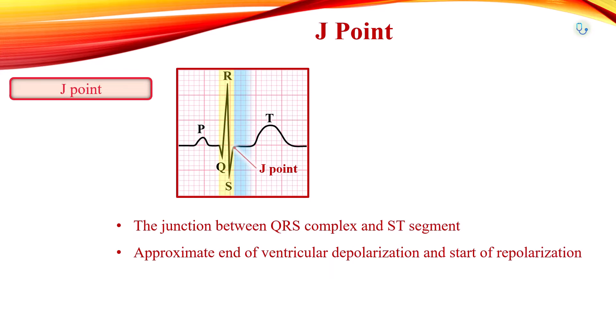The J-point is not always isoelectric, as there is an overlap of around 10 ms between ventricular depolarization and repolarization. This means few ventricular myocardial cells remain in a depolarization state when repolarization starts early in few other ventricular myocardial cells.